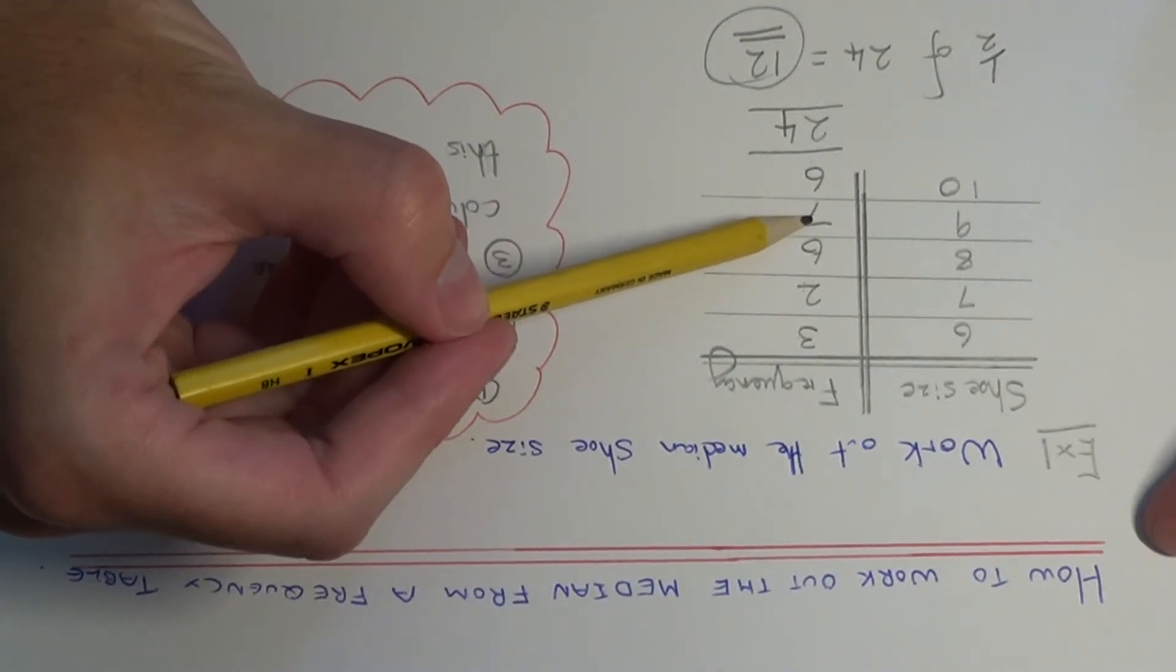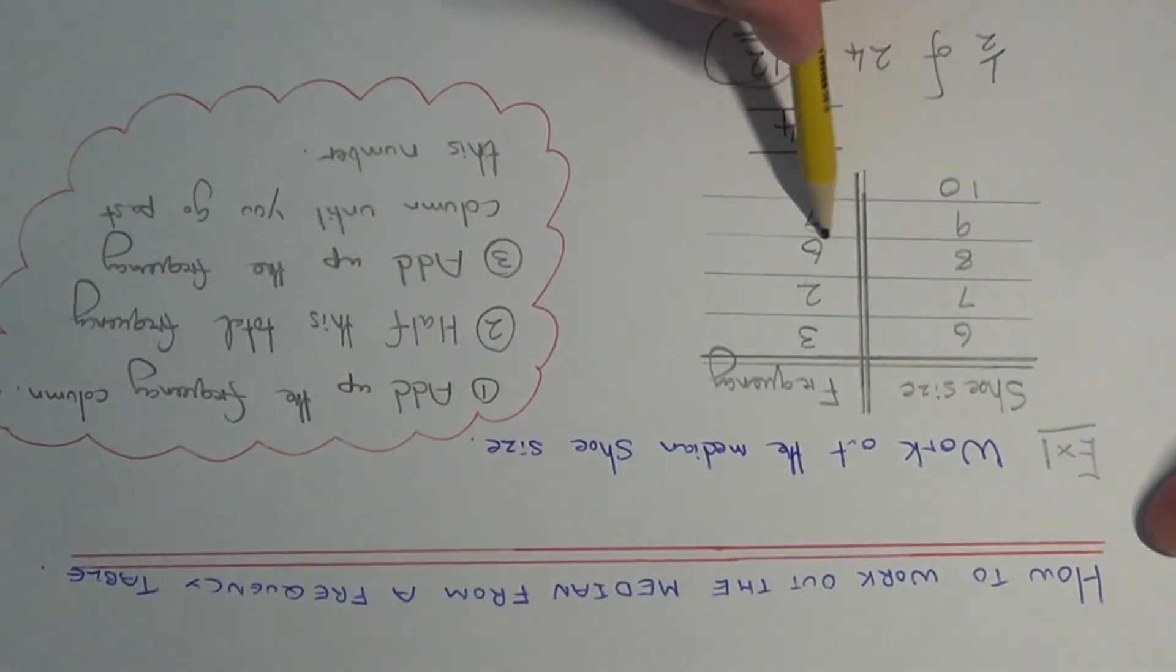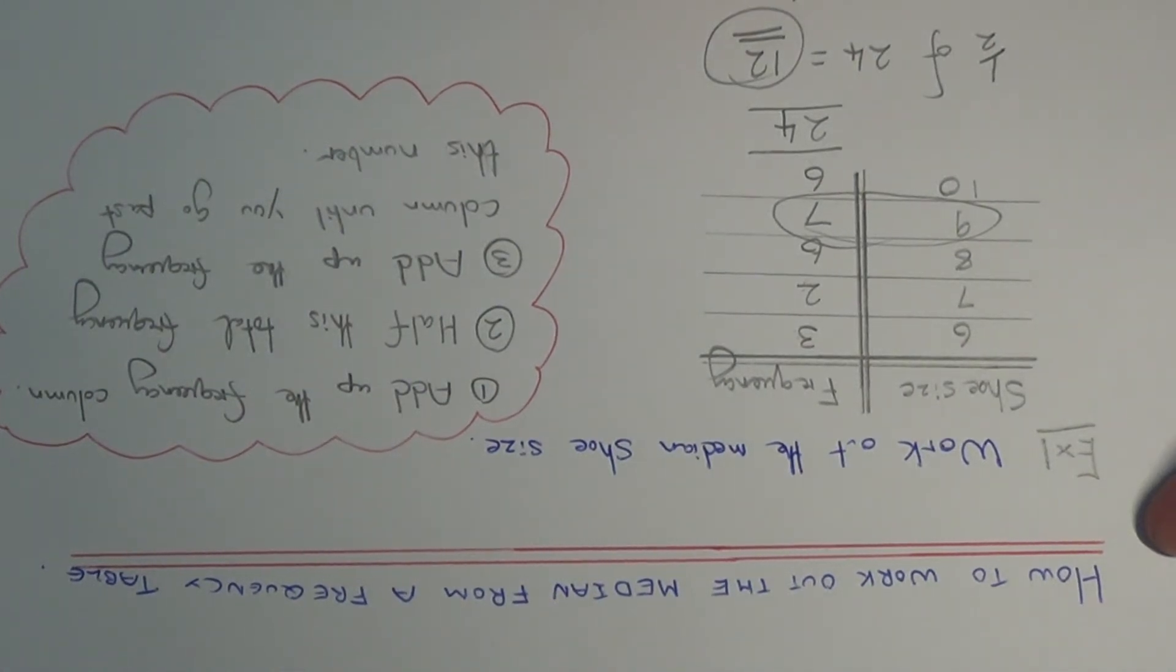So we've overtaken 12 on this shoe size here. So the shoe size where the median occurs at is 9. And that is your final answer.